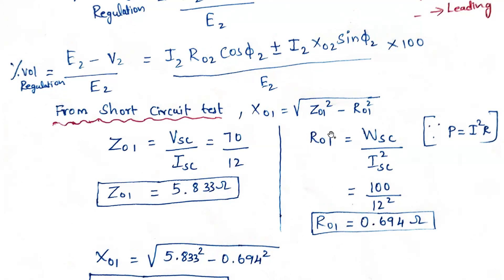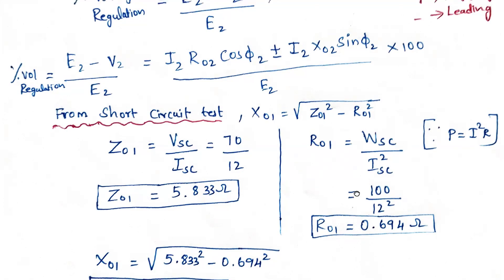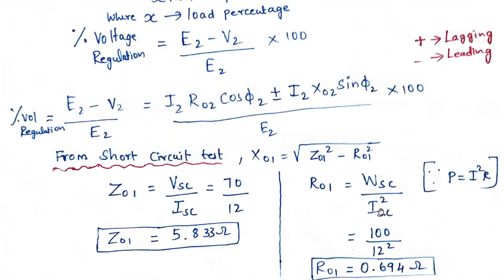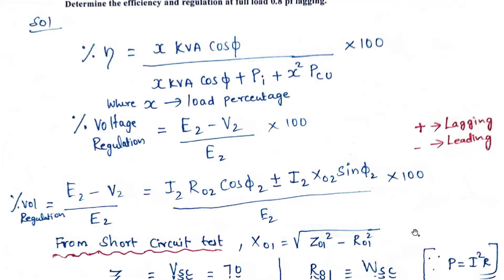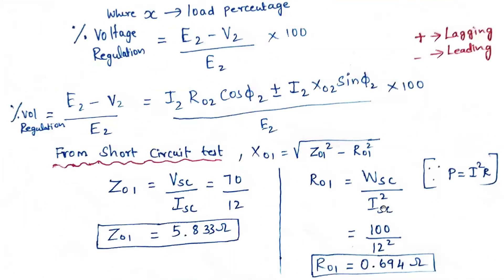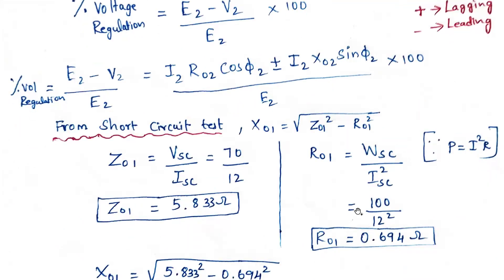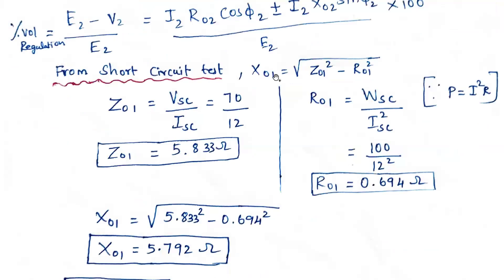Now we calculate R₀₁. Since power equals I²R, R equals P / I². So R₀₁ equals W_SC divided by I_SC squared. W_SC is 100 watts from the short circuit test, and I_SC is 12 amperes, so R₀₁ equals 100 / 144 = 0.694 ohms.